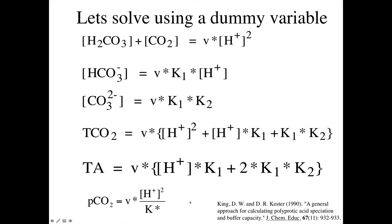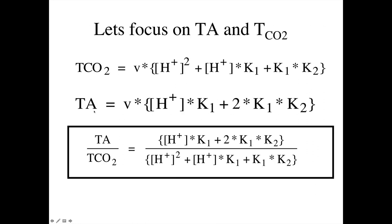Now we take combinations of these equations to compare, say, total CO2 to total alkalinity, or total alkalinity to bicarbonate concentration. By taking the ratios of pairs, we cancel the dummy variable. The relationship between total alkalinity and total CO2 is always (H+·K1 + 2·K1·K2) divided by (H+² + H+·K1 + K1·K2). Since we can measure H+ and the K values are functions of temperature and salinity, we can calculate this ratio.